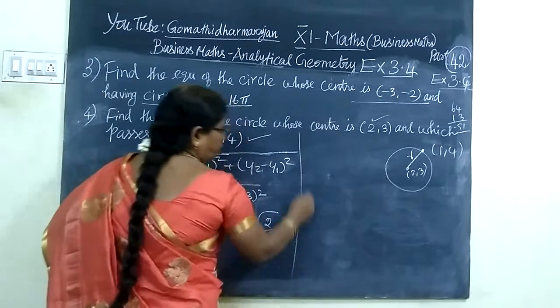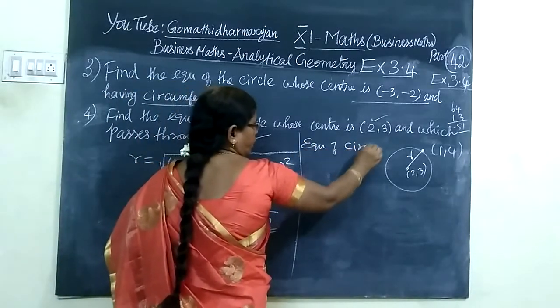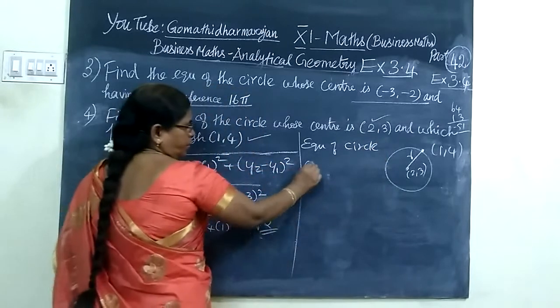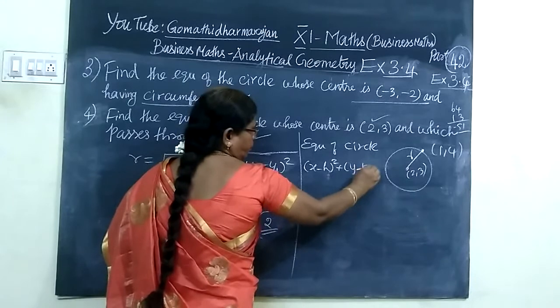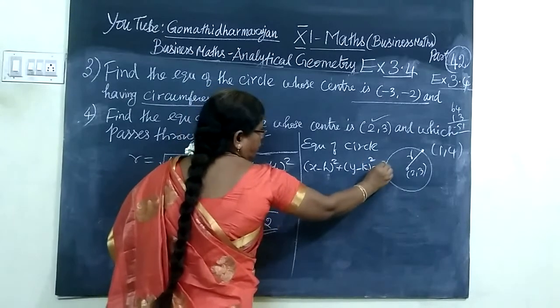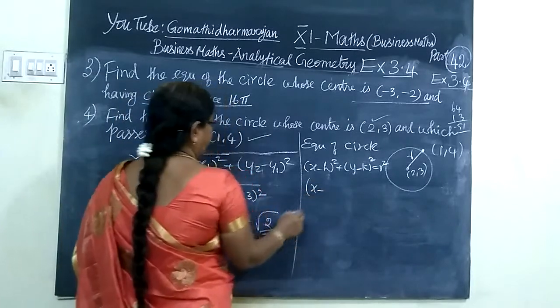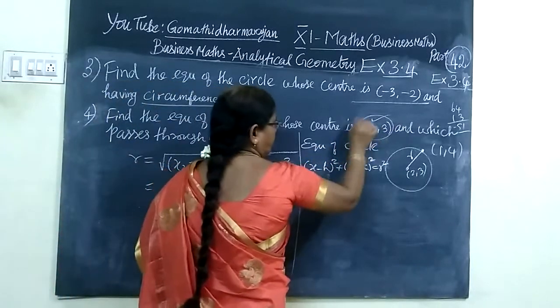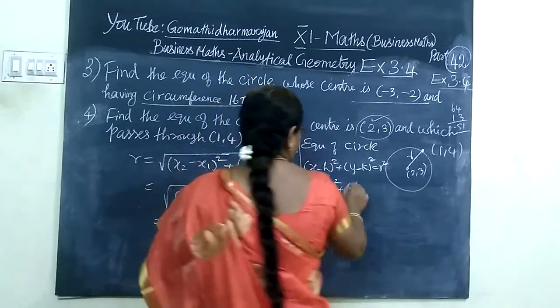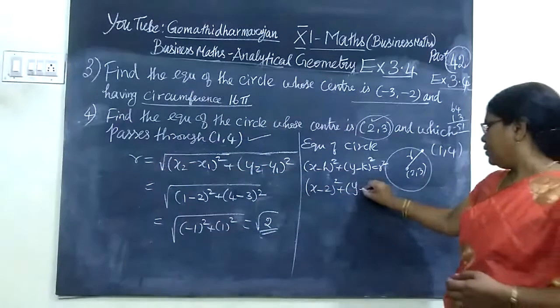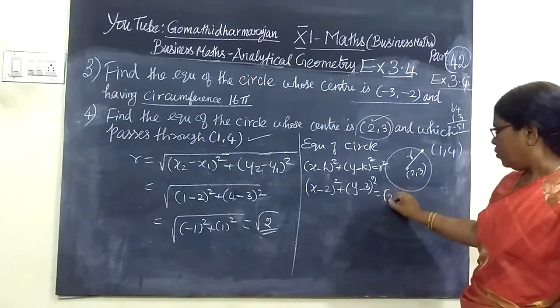Now we write the equation of the circle with center and radius. The form is (x - h)² + (y - k)² = r². So we write (x - 2)² + (y - 3)² = (√2)².